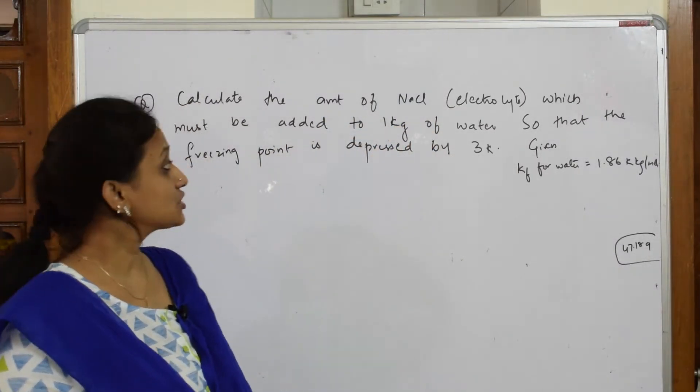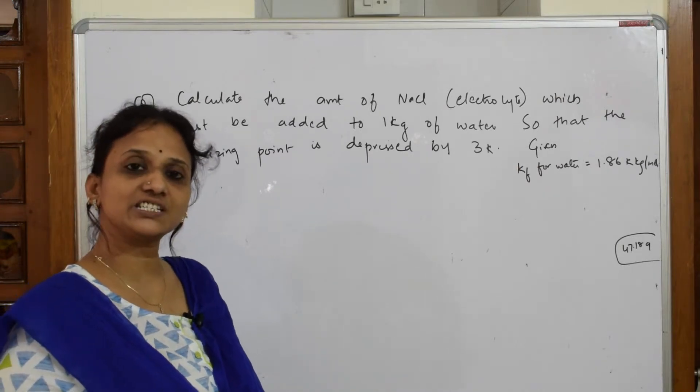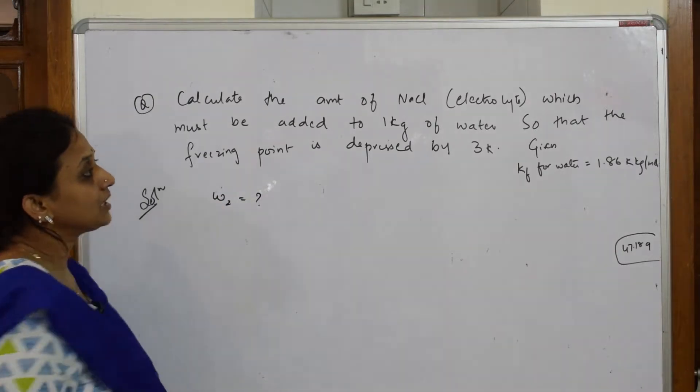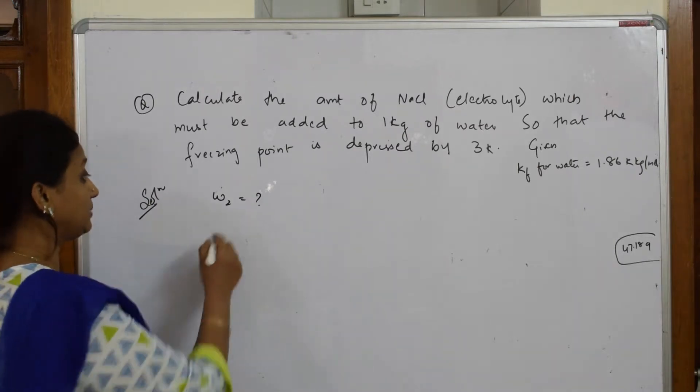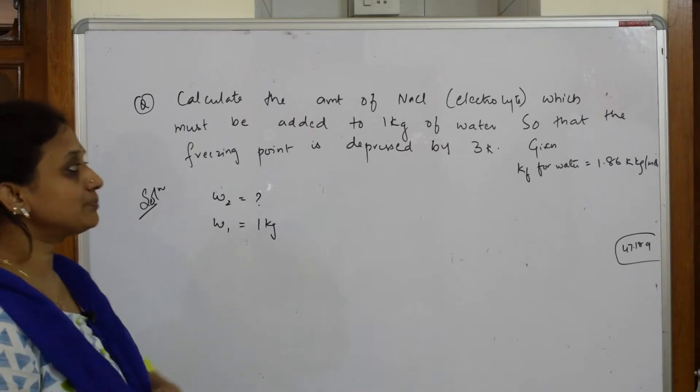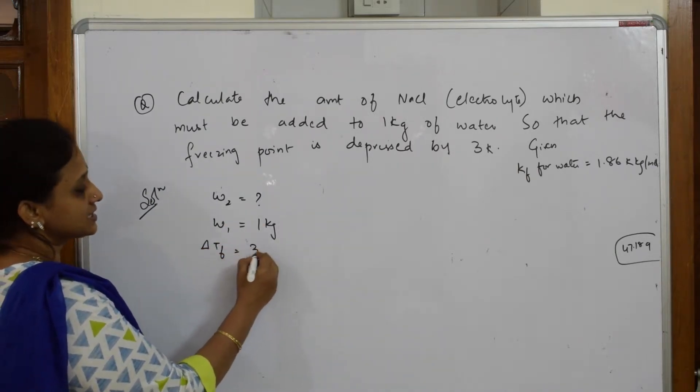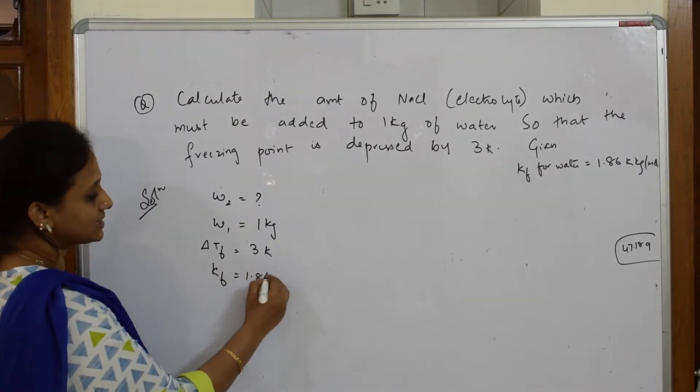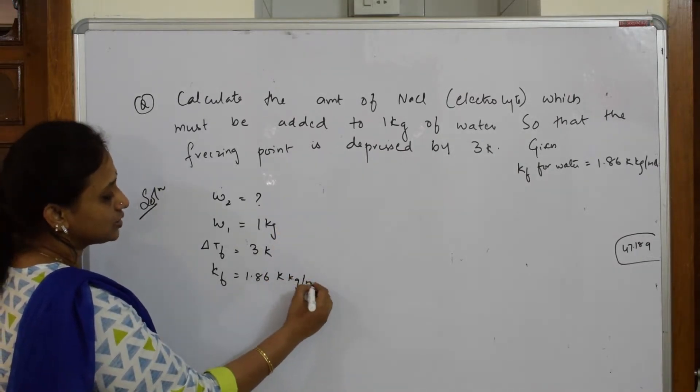Amount of sodium chloride is nothing but your weight of the solute, so weight of the solute is always denoted by w2. I have to calculate weight which must be added to 1 kilogram of water. w1 is given, weight of the solvent is 1 kg, so that the freezing point is depressed. That means ΔTf is given as 3 kelvin and Kf also is given to us. Kf is equal to 1.86 kelvin kilogram per mole. This is the unit for your cryoscopic constant.